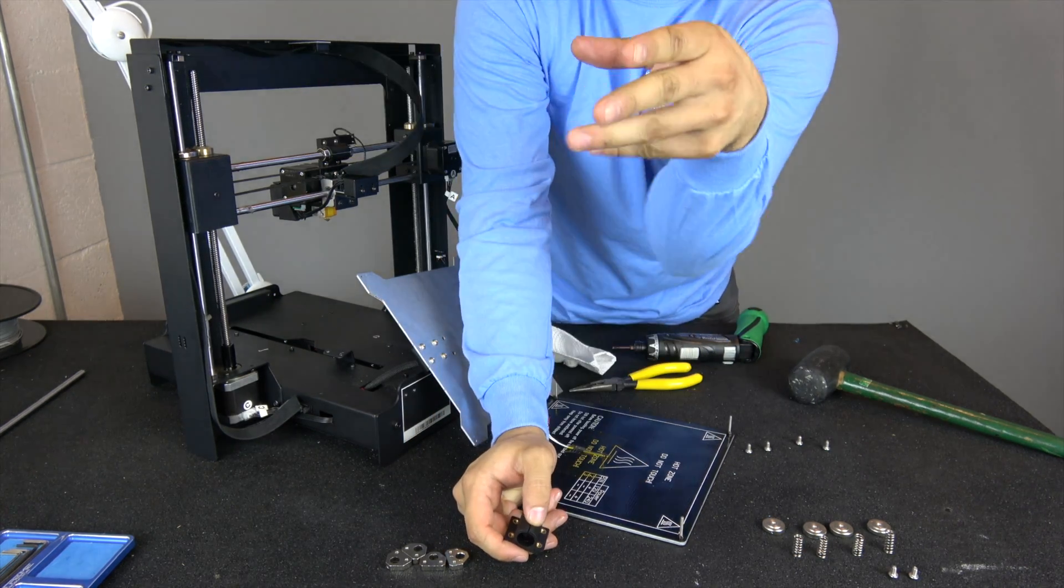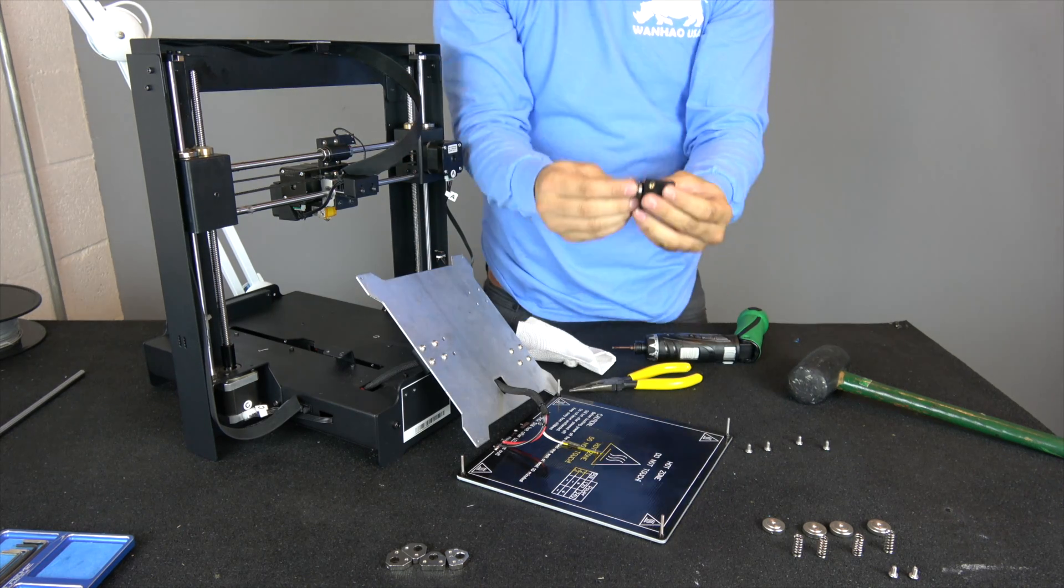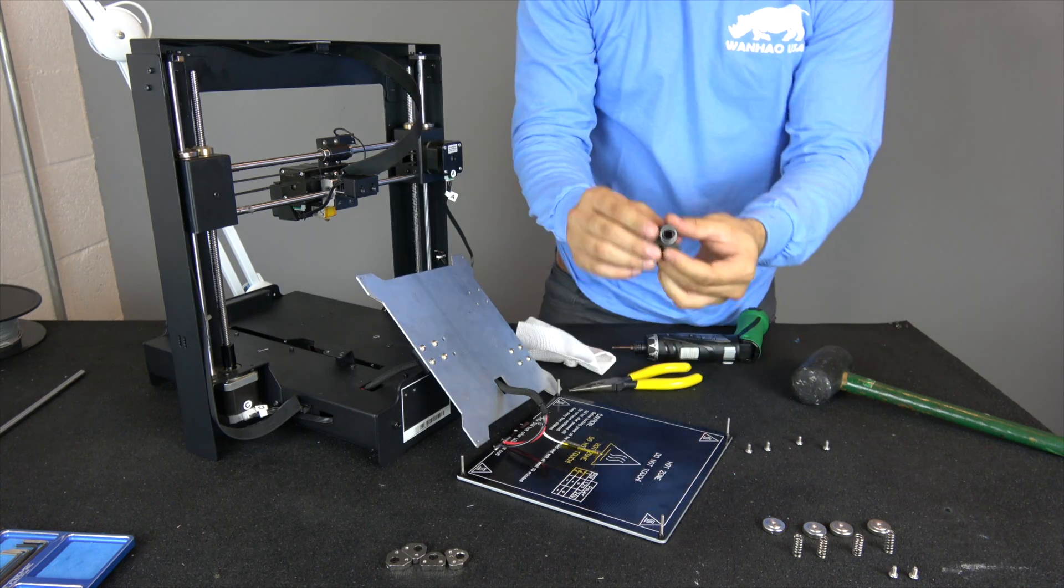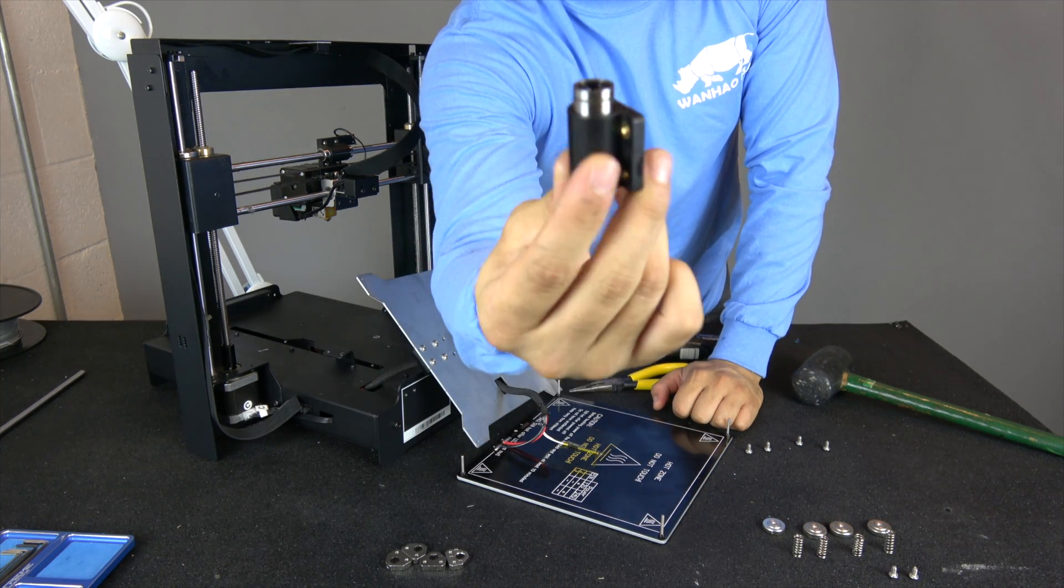Dispose of the old bearing and insert your new one into the housing. You should be able to hear it click into place.